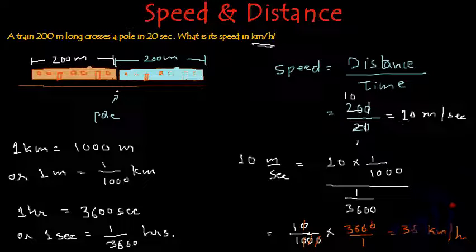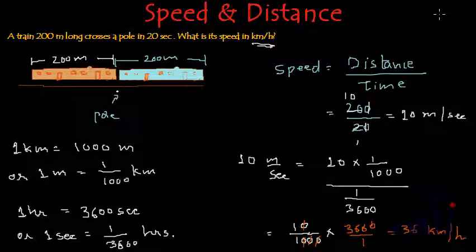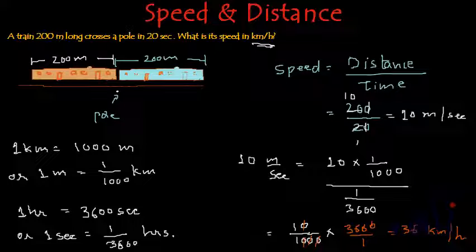So the speed of the train is 36 kilometers per hour.